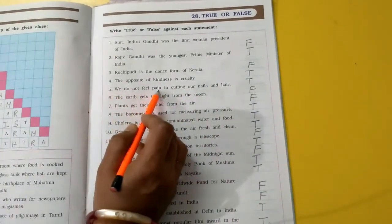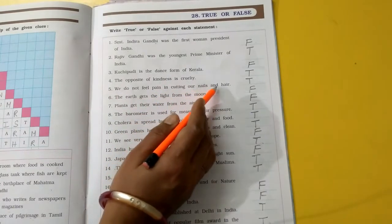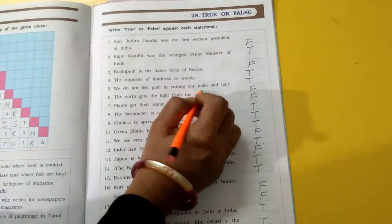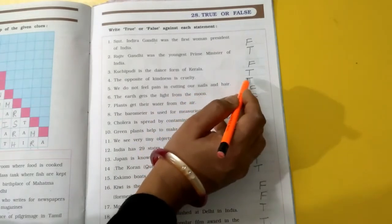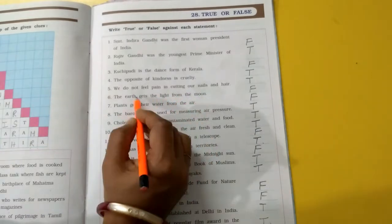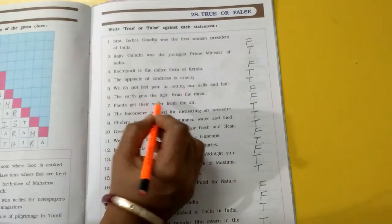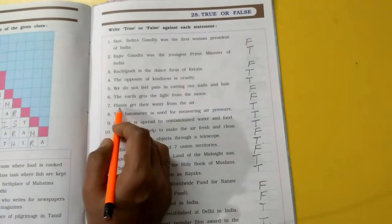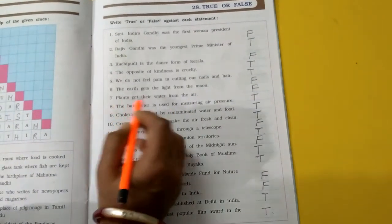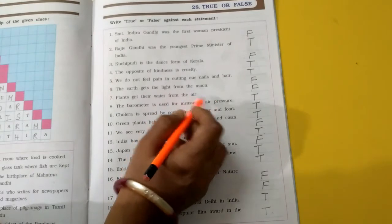We do not feel pain in cutting our nails and hair. Hamein koi dard nahi hota hai jab hum apne nakhun kaatte hain ya baal kaatte hain. True. The earth gets the light from the moon. Earth ko moon dwara light milti hai. False. Plants get their water from the air. Plants ko paani hawa se milta hai. False.